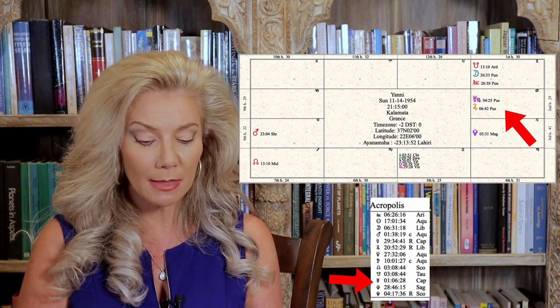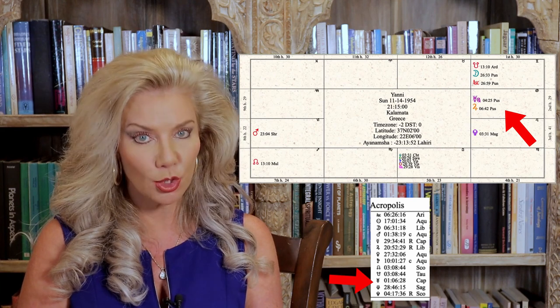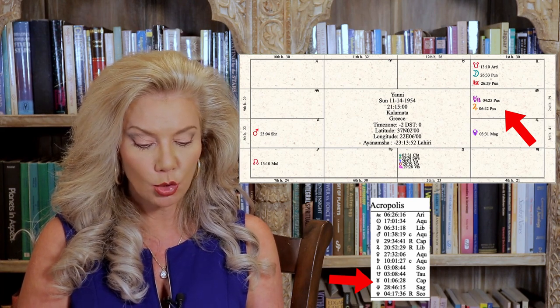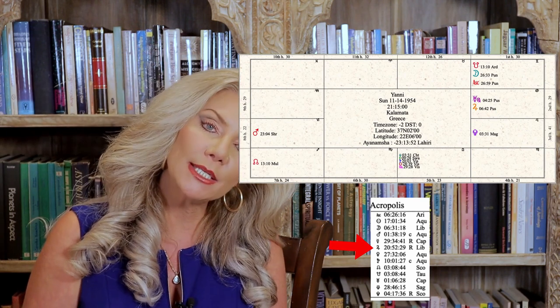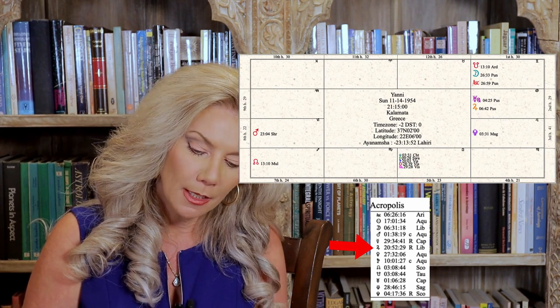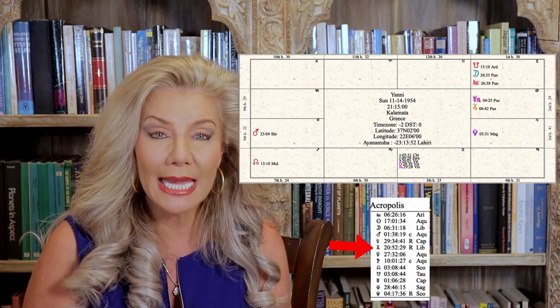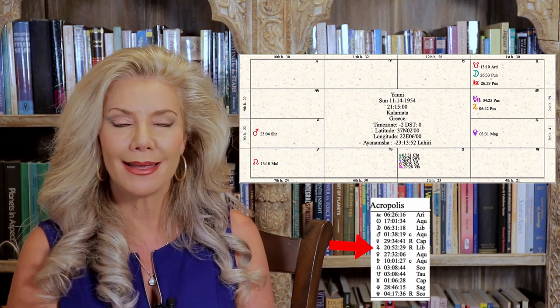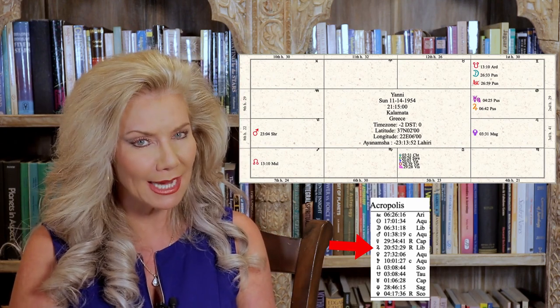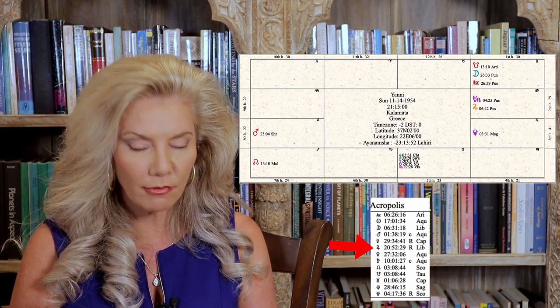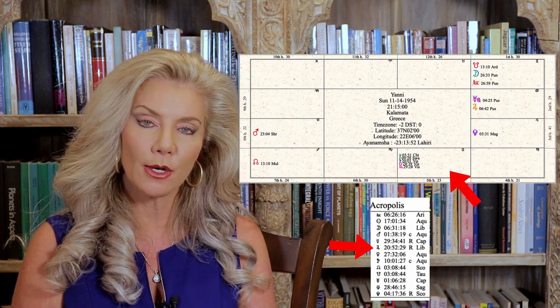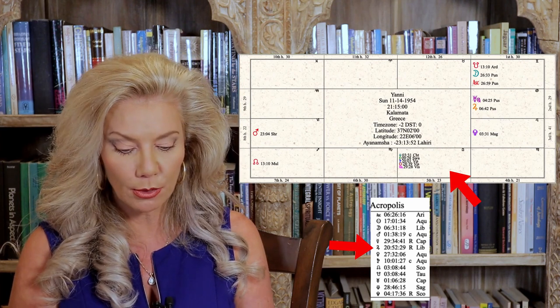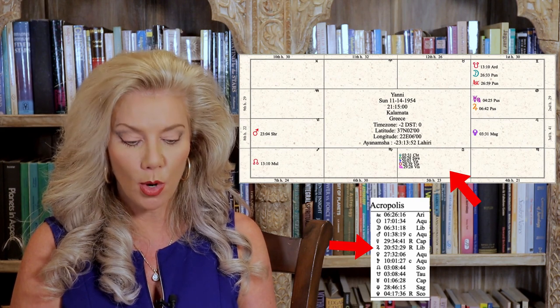But the other trigger was this. Transiting Jupiter during that time, between 1993 and 1994, transiting Jupiter was in Libra. Oh my God, talk about a lucky time. Jupiter was crossing over all those planets in the fifth house: Venus, Sun, Saturn, Mercury, and Neptune, activating it all the more.